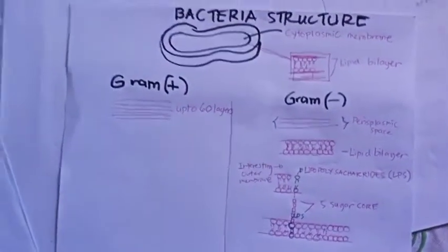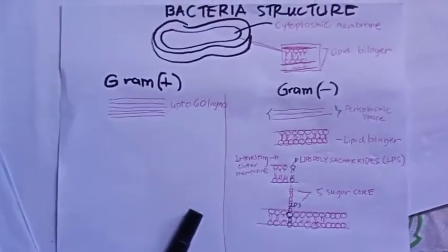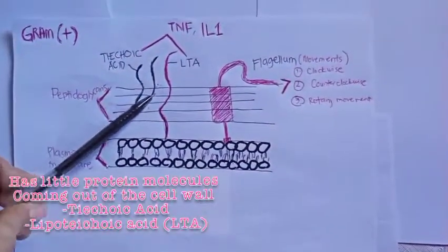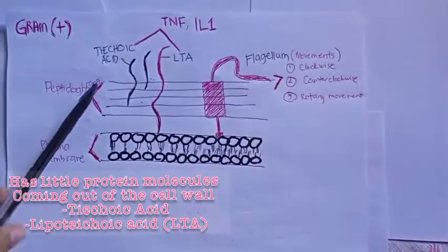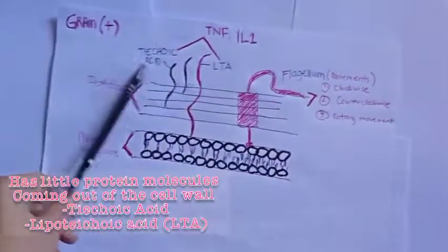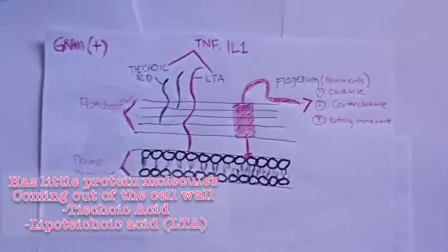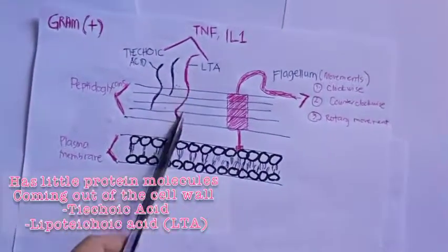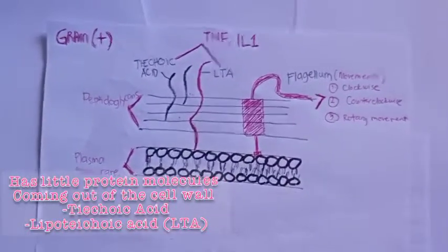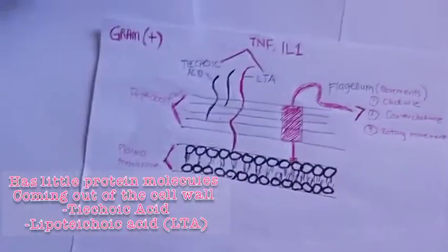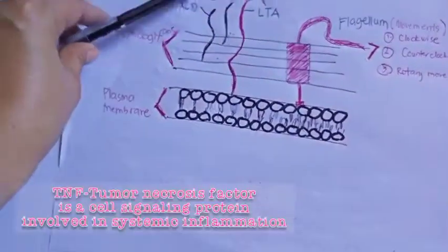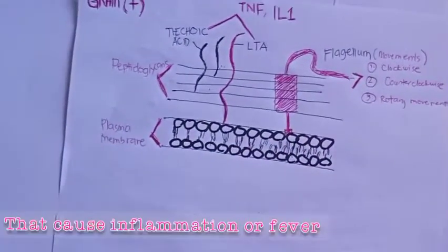In gram-positive bacteria, small protein molecules come out of the cell wall. These are called teichoic acids, which are lipid-associated molecules. Some are connected down to the plasma membrane and are called LTA, or lipoteichoic acid. The teichoic acid and LTA induce TNF and IL-1, which cause inflammation or fever.